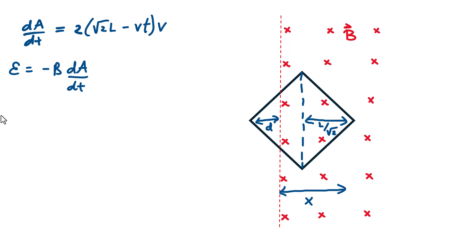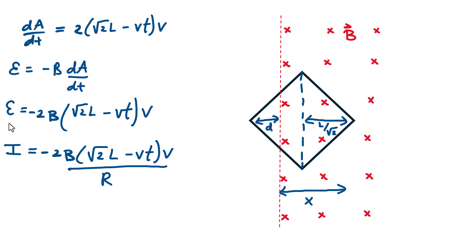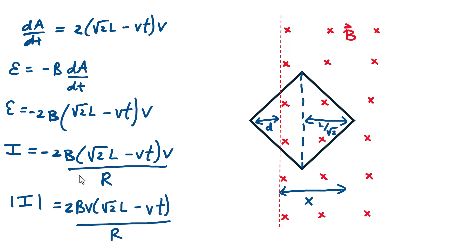Substituting that rate of change of area expression into Faraday's law, the current is simply that EMF divided by the resistance of the loop. Dropping the negative sign for just the magnitude, this is our expression for the current in the second phase. Let's look at what this looks like with the loop in various positions — at the midway point and when the loop is completely inside the field.